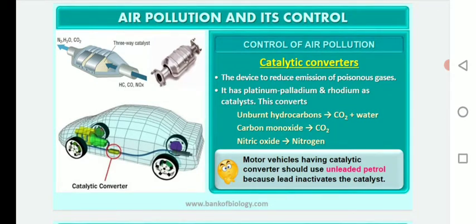Catalytic converters are devices used to reduce emission of poisonous gases. They are made up of platinum, palladium, and rhodium as catalysts. These devices convert unburnt hydrocarbons into CO2 and water, carbon monoxide into carbon dioxide, and nitric oxide into nitrogen. Motor vehicles with catalytic converters should use unleaded petrol because lead inactivates the catalyst.